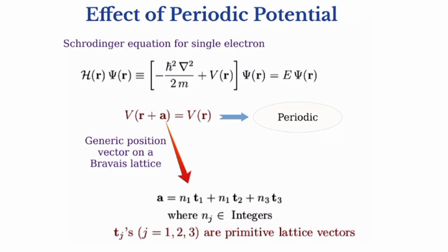Now, what is the effect of this periodic potential? The Schrödinger equation for a single electron is: Hψ = [−ℏ²∇²/(2m) + V(r)]ψ(r) = Eψ(r), where V(r + A) = V(r) is the periodic potential. Here A is the translational vector equal to n₁T₁ + n₂T₂ + n₃T₃, where Tⱼ are the primitive lattice vectors, j = 1, 2, 3.